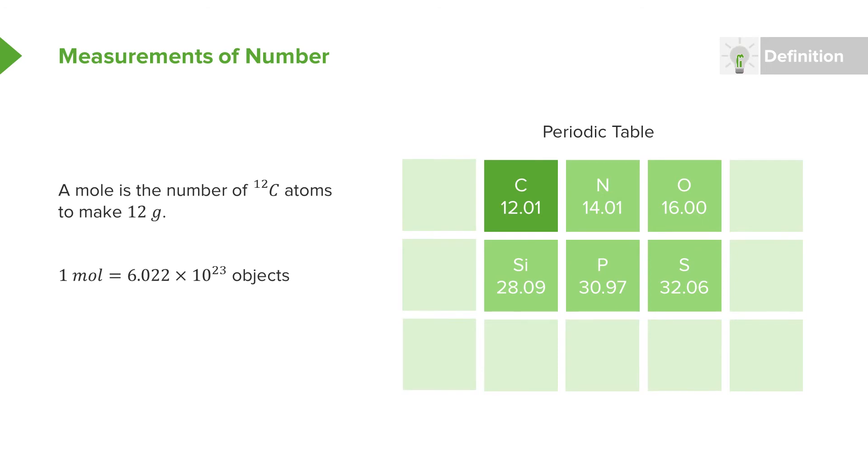So this unit of mole is just measuring a number. It's just a number of objects. It doesn't have any physical units like meters or anything like that. It's just a number. So I could say, for example, a mole of apples or a mole of planets and just be measuring a huge number of any object.